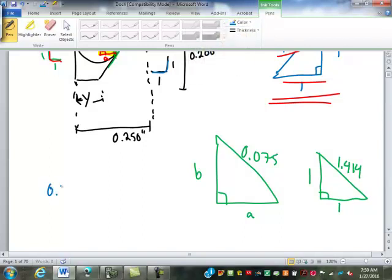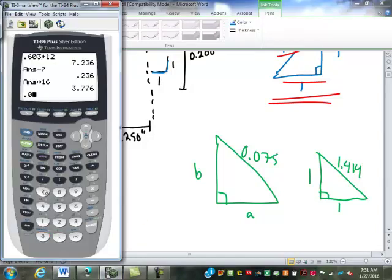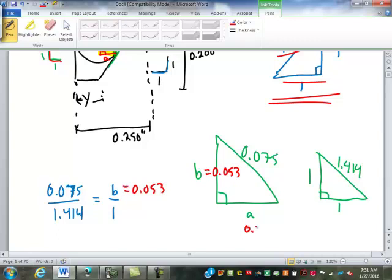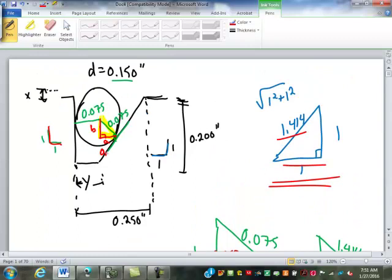Well, we know 75 thousandths relates to 1.414 in the same way as B relates to 1. So if we cross multiply and divide, we get 53 thousandths for B. So both A and B are 53 thousandths. Anybody else come up with that number? Cool, one of you at least. Good deal. So we've got 53 thousandths here and 53 thousandths here.